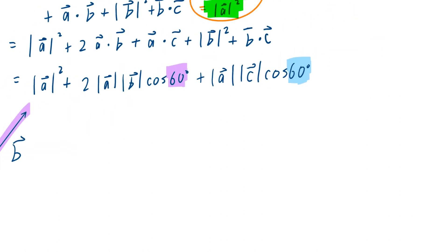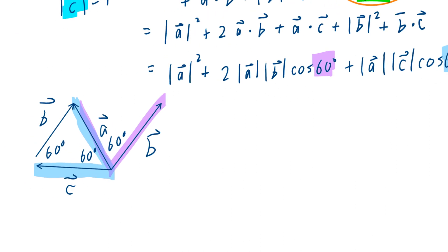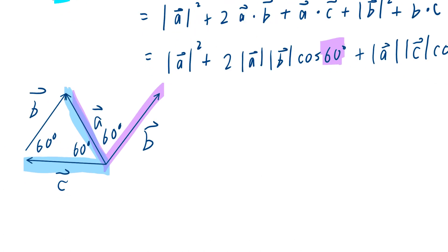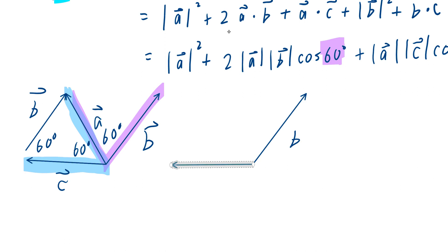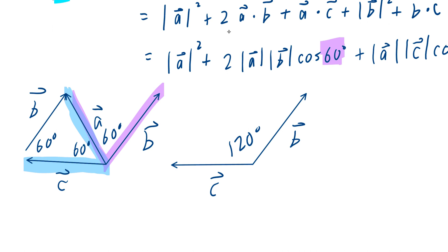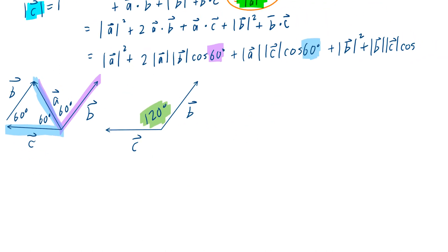Here's the next piece: plus magnitude of vector b squared, plus — by definition — b dot c equals magnitude of b times magnitude of c times cosine of some angle. I'd like you to press pause and find the angle. The correct answer is 120 degrees. Why? Because 60 plus 60 equals 120 degrees. Notice the vectors b and c are connected tail to tail, so the angle between them is 120 degrees.